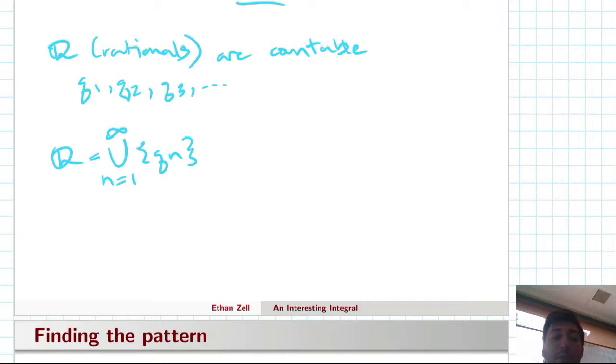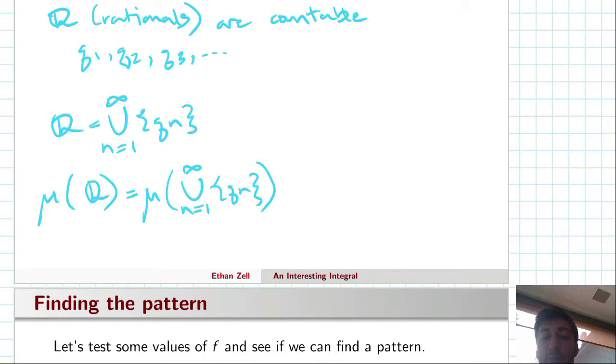If we try and measure that, the measure of Q is the measure of that disjoint union from one to infinity of the singletons qn. But mu is a proper measure; in fact, it's a Lebesgue measure. Because this is a disjoint union, that's just the sum from one to infinity of the measure of each of the singletons. But the measure of a single point is just zero, so it's an infinite sum of zeros, which is just zero itself.